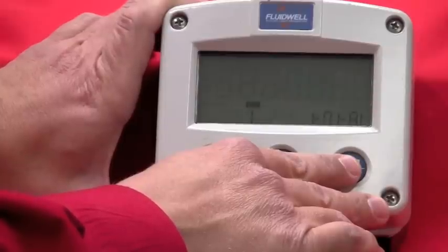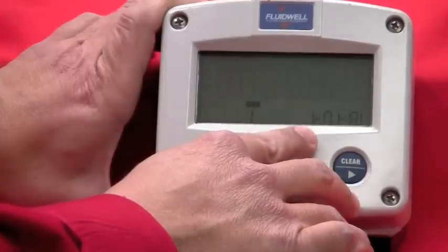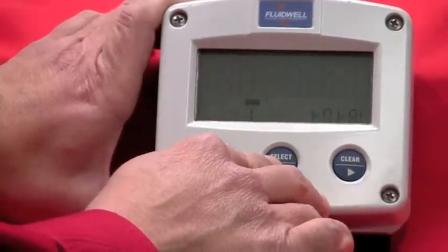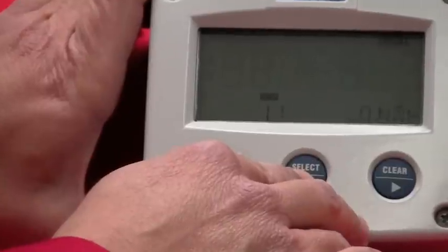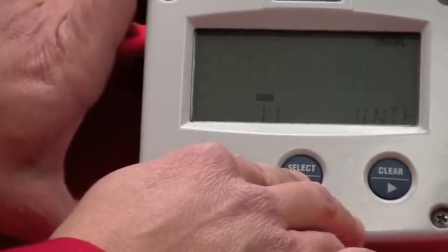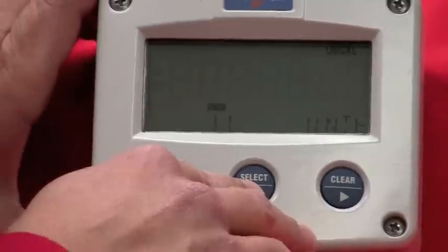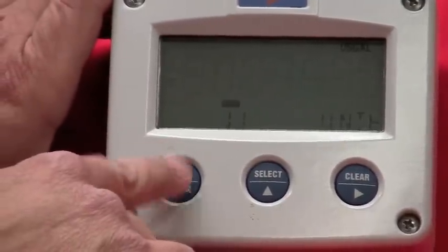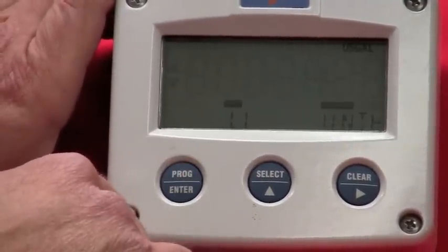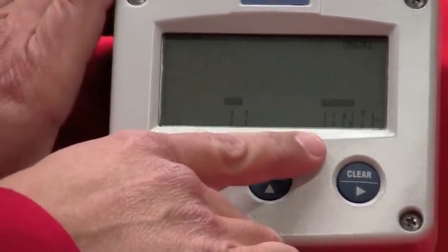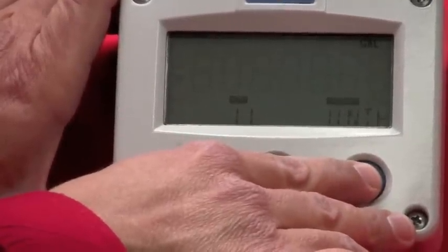To set the meter up and configure it, to drop into any of the main menus here, you're going to utilize your select key. So I'll hit it once. You'll see units. Now to program it or change the units, right now I'm in U.S. gallons. To change that, just push and release the program key. You'll notice now programs is flashing, units, and now I can scroll through the various units here.